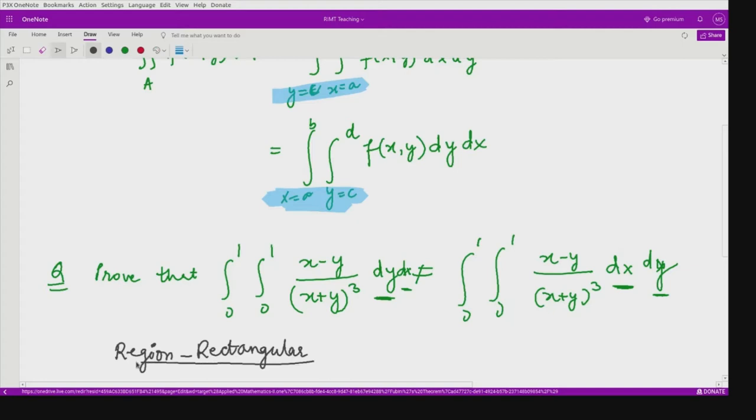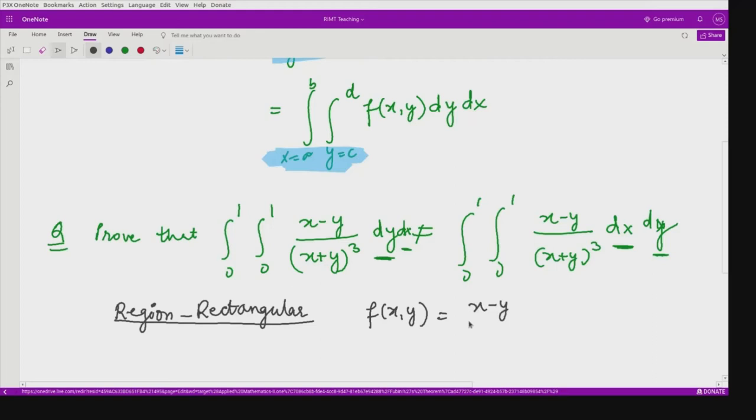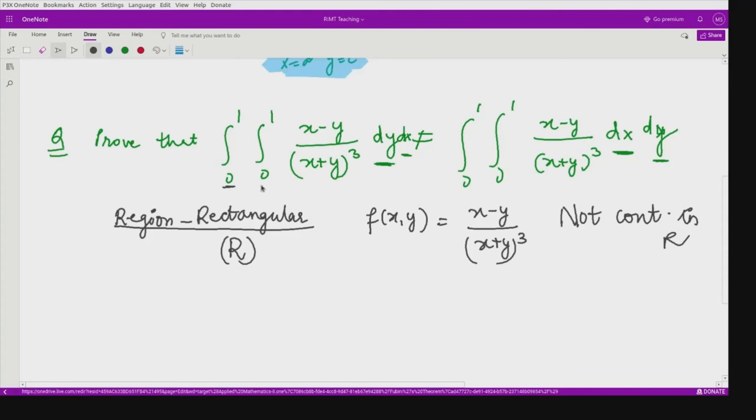This region is given to be rectangular but if you see in this particular region, your function is not continuous. What is your function here? f(x,y) that is given to be (x-y)/(x+y)³. This function is not continuous in the given rectangular region. Say the region is R. Not continuous in R. Why? Because in this region, we have this point (0,0).